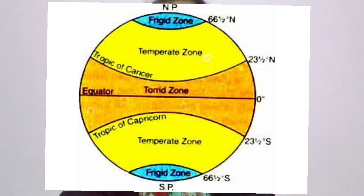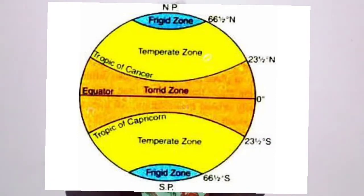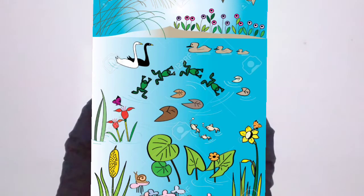Temperature is very low in the Frigid zone because sunrays are slanting. The Tropic of Cancer at 23 degree 30 minutes north and Tropic of Capricorn at 23 degree 30 minutes south mark where sunrays fall perpendicular, making it the hottest region. Due to these temperature zones and variation in sunlight intensity, a variety of plants and animals are found on Earth.